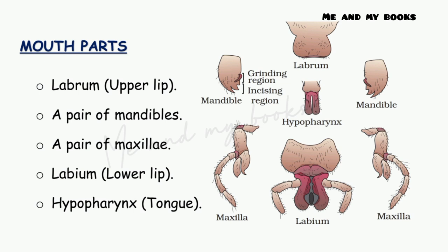Observe the figure showing the different mouth parts of cockroach. They include: the labrum, which is the upper lip; a pair of mandibles; a pair of maxillae; and the labium, which is the lower lip.